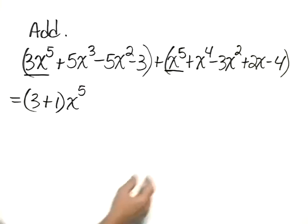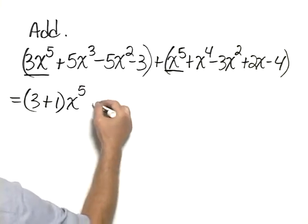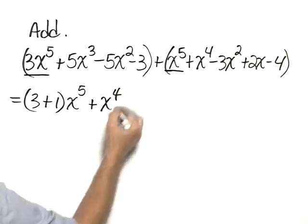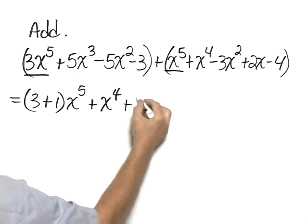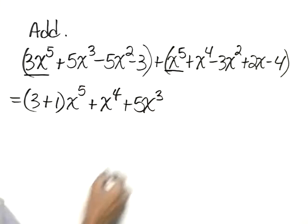Next, we look for x to the 4ths, of which there is only 1, so it's plus x to the 4th. Now, we look for x cubed, of which there is only 1 here, so plus 5x cubed.